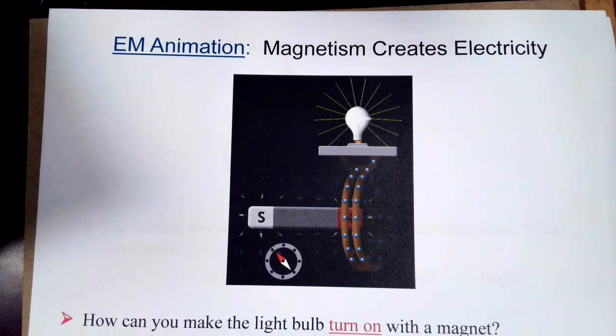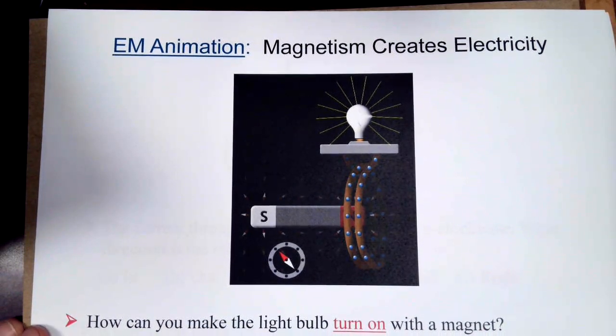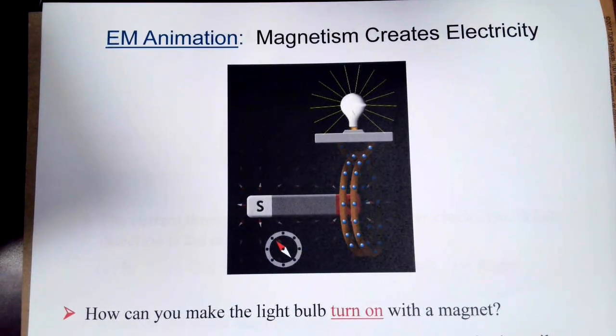We can also do the reverse. We see that we can generate magnetism using electricity, but we can also use magnetism to create electricity. In this case, we have a moving magnetic field. This is linked in your next slide on Lon Capa. You're moving a magnet through a pickup coil.